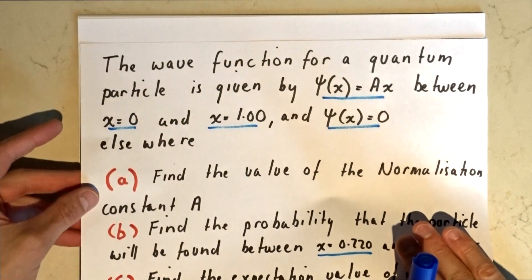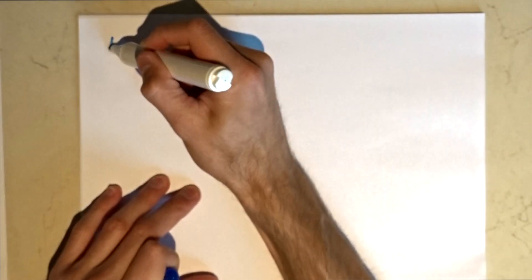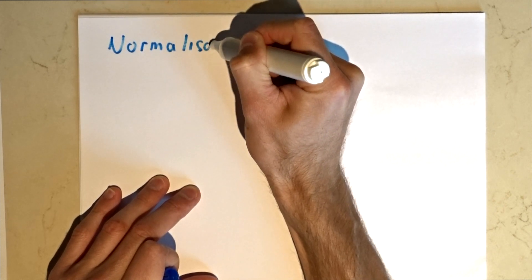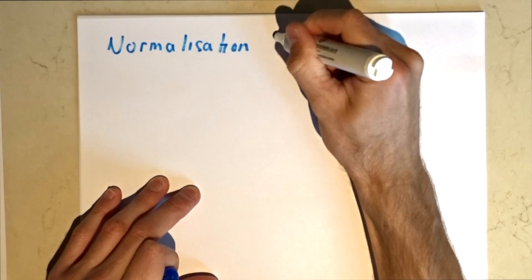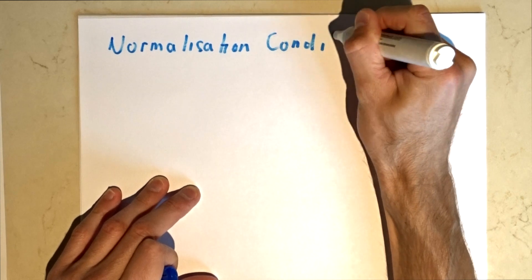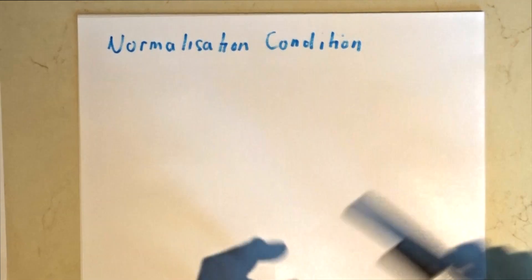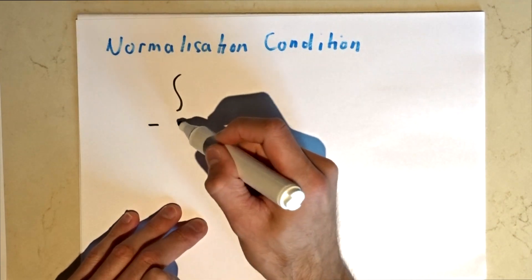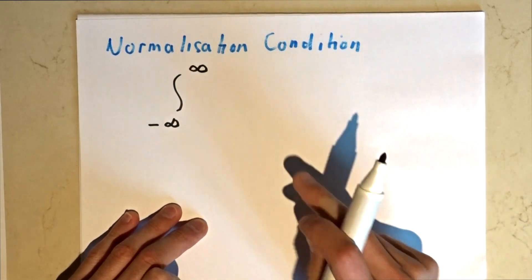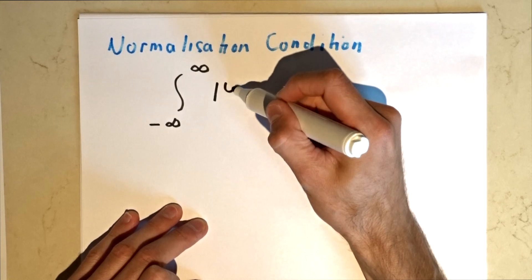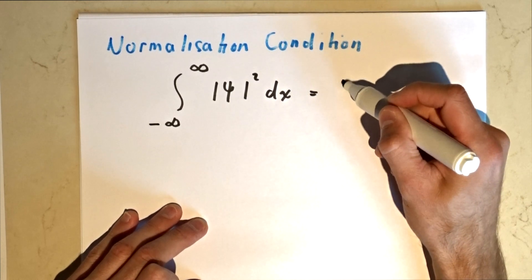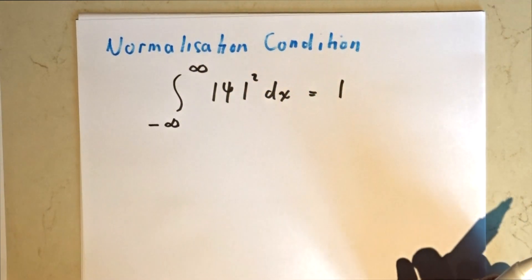To start with, what we have to do is talk about the normalization condition. The normalization condition says that between the values negative infinity and infinity, the absolute value of our wave equation squared equals one. So this is our starting point — that's our normalization condition.